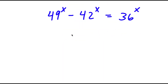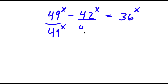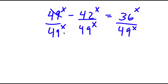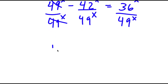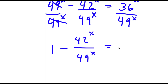In this problem, I have 49 to the power of x minus 42 to the power of x is equal to 36 to the power of x. I'm going to first start by dividing every term by 49 to the power of x. These two cancel out, and now I get 1 minus 42 to the power of x over 49 to the power of x is equal to 36 to the power of x over 49 to the power of x.